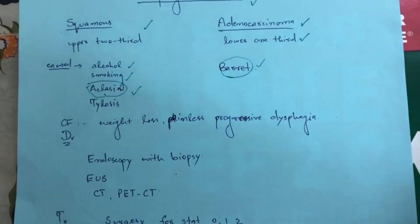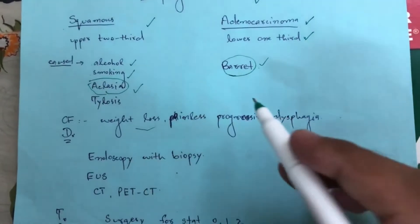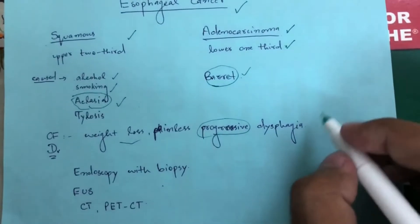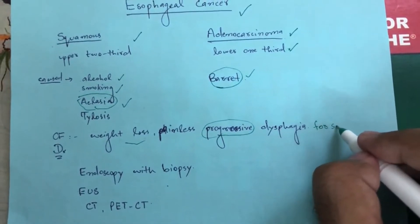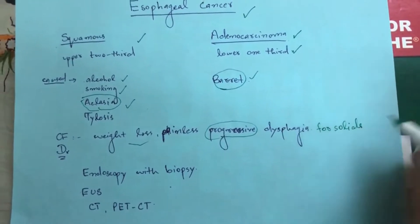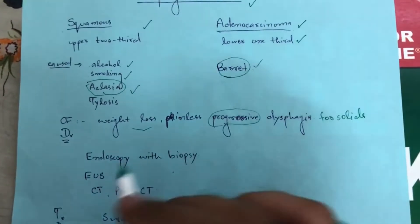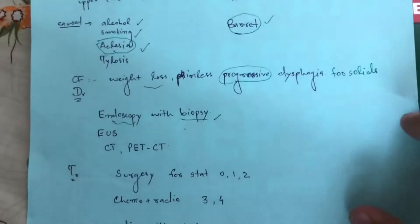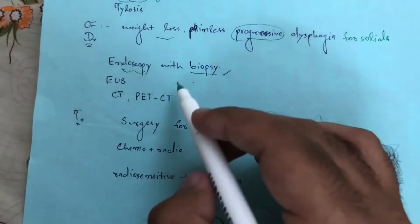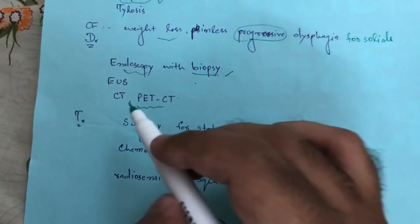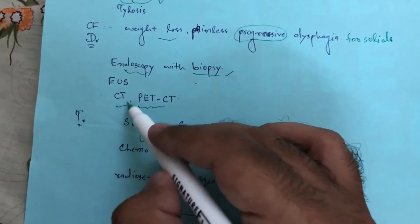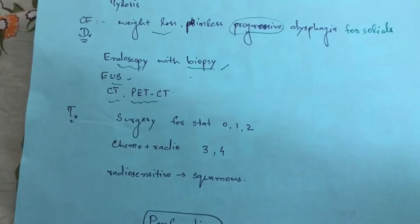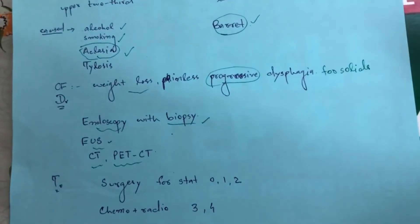Clinical features of esophageal cancer include weight loss and progressive, painless dysphagia mainly for solids. Diagnosis is by endoscopy with biopsy to confirm cancer. To assess for metastasis, we do CT scan. Endoscopic ultrasound is done to check depth of invasion and lymph node involvement. Lymphadenopathy may also be present.